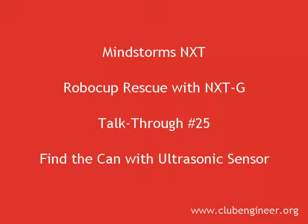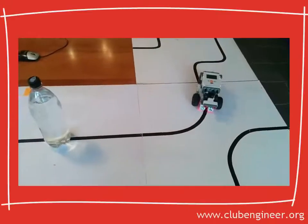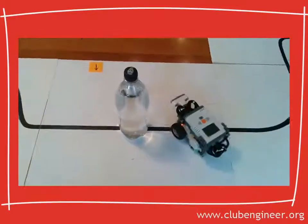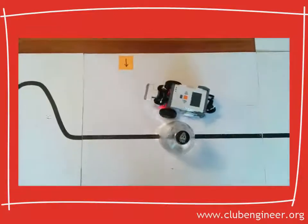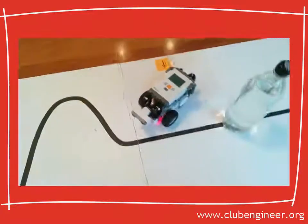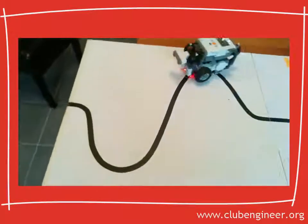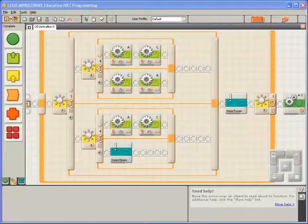Earlier on we solved the water tower and that involved fitting an ultrasonic sensor to our robot. The ultrasonic sensor allows the robot to detect the distance it is from an object. Using the ultrasonic sensor we should be able to design an algorithm that's much faster to find the water can. So let's get started.